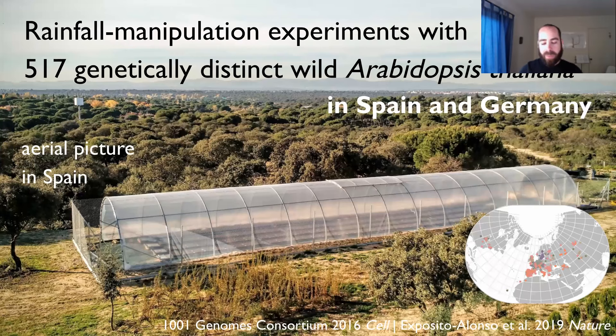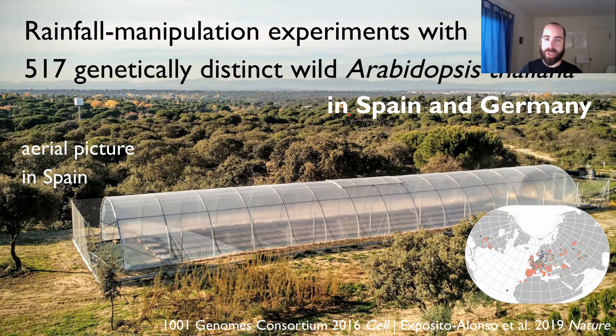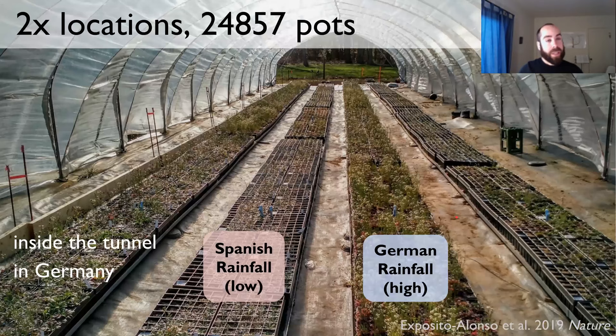We conducted so-called common garden experiments with 500 wild-type accessions or strains from Arabidopsis thaliana, planted in two locations: Spain at the warm edge of the distribution, and Germany at the center of the geographic distribution. These genetically distinct accessions come from many regions in the world and potentially might have locally adapted to those conditions.